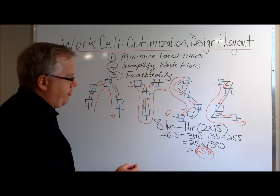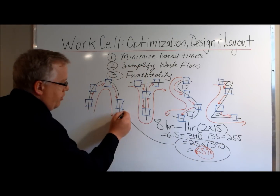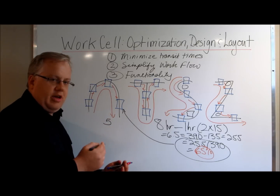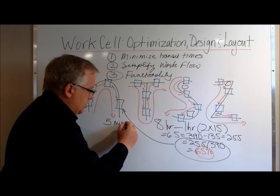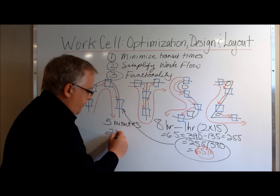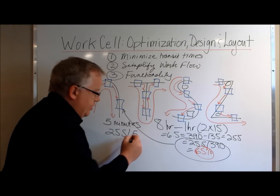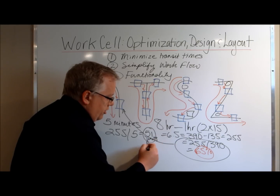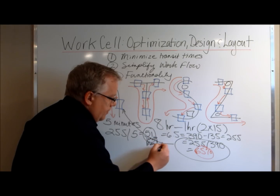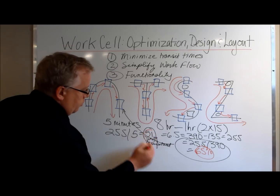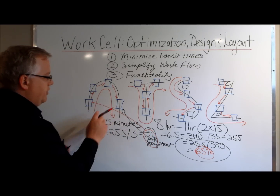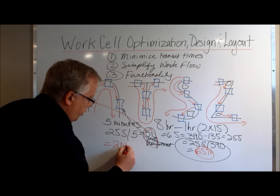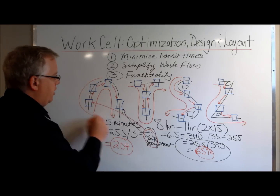You can backtrack this information into the number of units produced per workstation. In this example, if the cycle time for an operation is five minutes, you take 255 minutes of actual work time divided by the five-minute cycle time, which gives you 51 units manufactured per workstation. With four workstations in the cell, that's a production volume of 204 units emerging from the entire work cell.